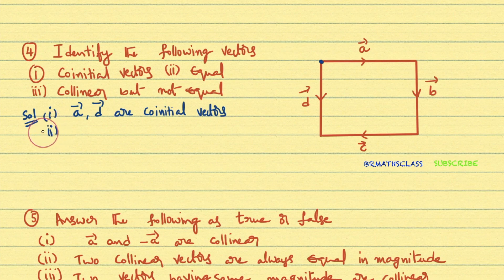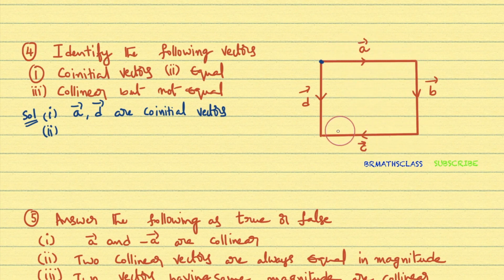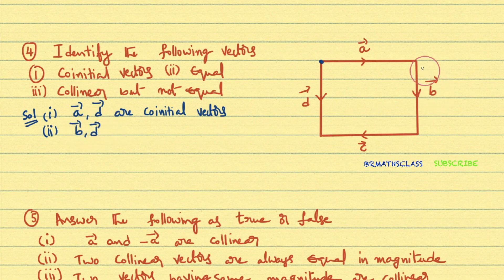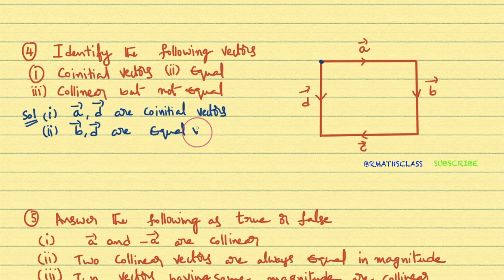Second bit — equal vectors. Vectors having the same magnitude and same direction are equal vectors. Observing the diagram, a-bar and c-bar have equal magnitude but their directions are opposite, so they are not equal. Vectors b-bar and d-bar have the same magnitude and same direction. So b-bar and d-bar are equal vectors.